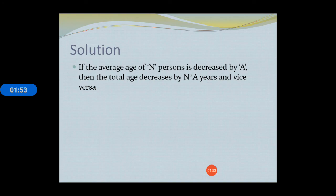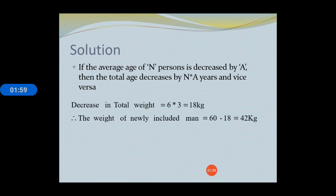Just applying this shortcut key, we get our answer. Decrease in total weight is given by number of men multiplied by how many kgs the weight is decreased by. So 6 into 3 which is equal to 18 kgs.